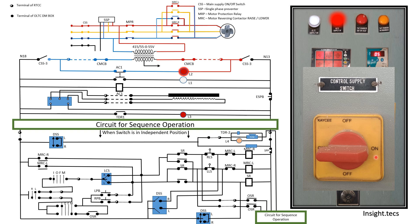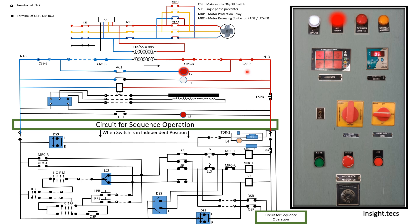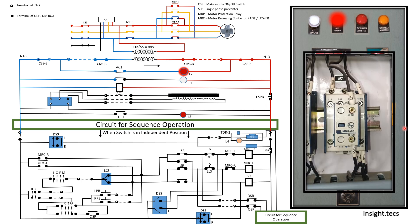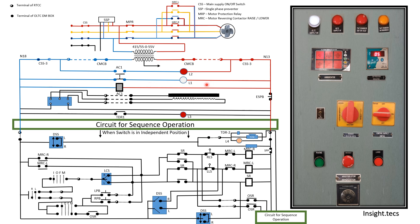The CSS3 switch is located on the RTCC panel itself. Once it is turned on and power supply reaches the RTCC panel, the AC1 contactor will be operated and gets energized. Because of that, this contact will be closed, the NC contact will open, and L2 will stop glowing. Instead, L1 LED will glow, indicating that OLTC supply is on. This is the working of the AC1 contactor.